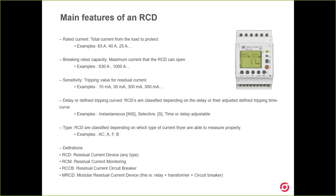Let's start with rated current. Everybody knows that name. This is the total current from the load that we need to protect. The most typical examples for residual current circuit breakers, which have the rated current by itself, are 6, 33, or 40 amps. This is a very typical rated current for these RCDs.